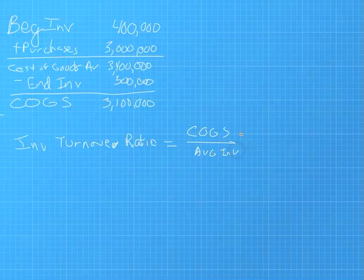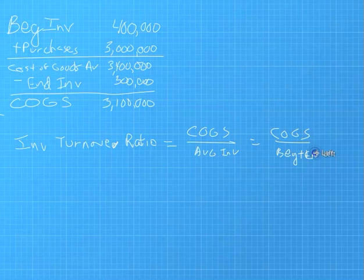So in this case, it's just simply a calculation of, again, COGS, divided by your beginning plus your ending inventory, plus your ending inventory, divided by two, so you just get an average.